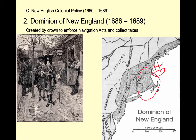Sir Edmund Andros is put in charge of the Dominion of New England. He is an Englishman. As shown in the picture, he's walking through the streets of Boston while people shake their fists and glare at him. They don't like him because he makes the people of Boston use British ships, go through British ports, pay British taxes, and only sell to the British—hurting the colonists' economy for the benefit of Andros and Mother England.